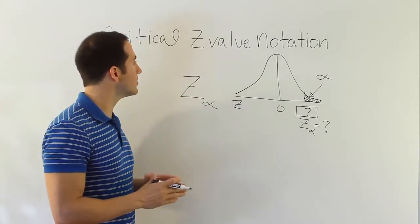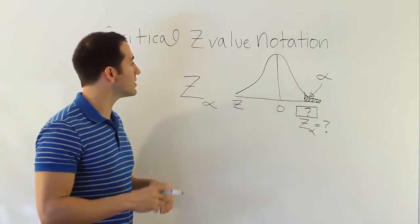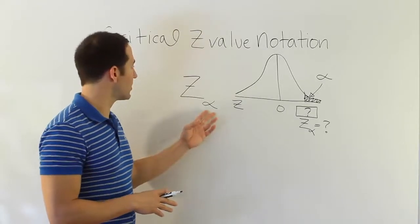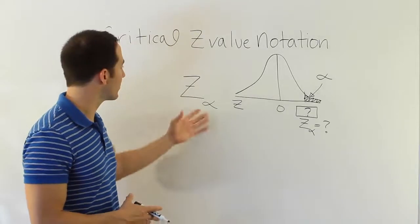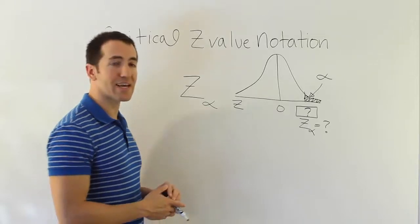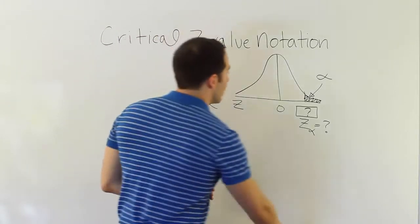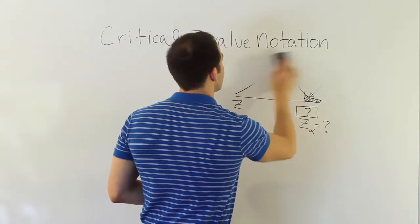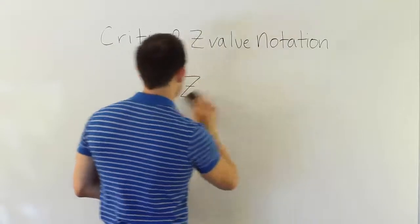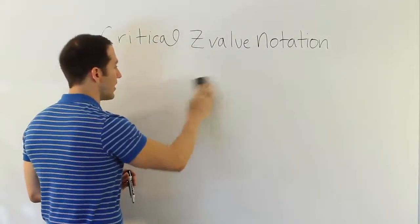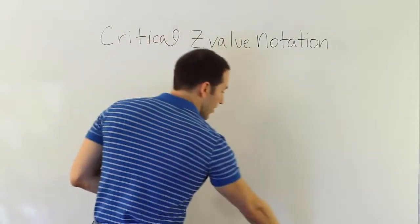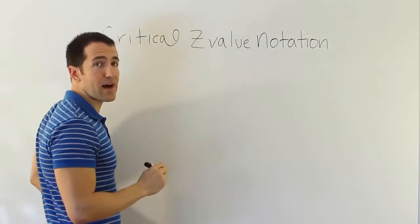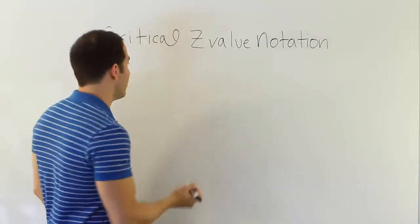Let's do some quick examples where we put numbers in here to make sure you're familiar with what the notation is getting at. I'm going to do a couple of drawings and talk about how you would go about finding the z-value. It's actually a skill we already have.